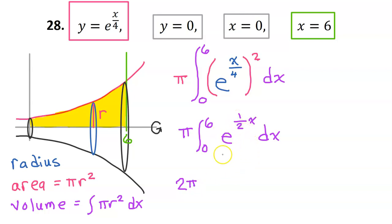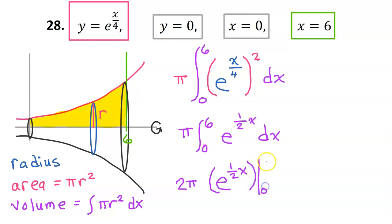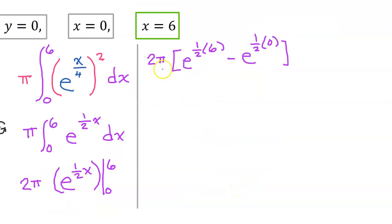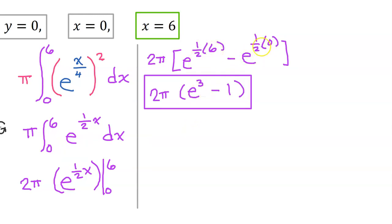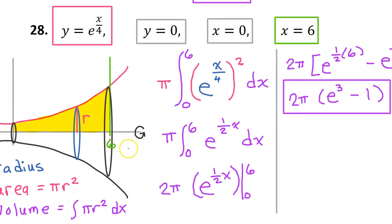Going ahead with the anti-derivative: the anti-derivative of e to the u power is e to the u power, so I still have e to the 1/2 x power. Applying the limits from 0 to 6, I need the value at 6 minus the value at 0. Leaving 2 pi out in front, 1/2 of 6 is 3, and e to the 0 power is 1. So the final answer is 2 pi times (e cubed minus 1), which is the volume of this solid of revolution.